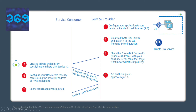Then you share the private link service ID or resource URL alias with your consumer — you can share it offline or advertise it publicly so that required consumers can connect over this private link network. Based on that, the consumer network will create a private endpoint by specifying the private link service ID, and a connection request will be sent. The next step is to act on the request to approve or reject it. Once the decision is taken, the connection is established or rejected. That's how the workflow works.